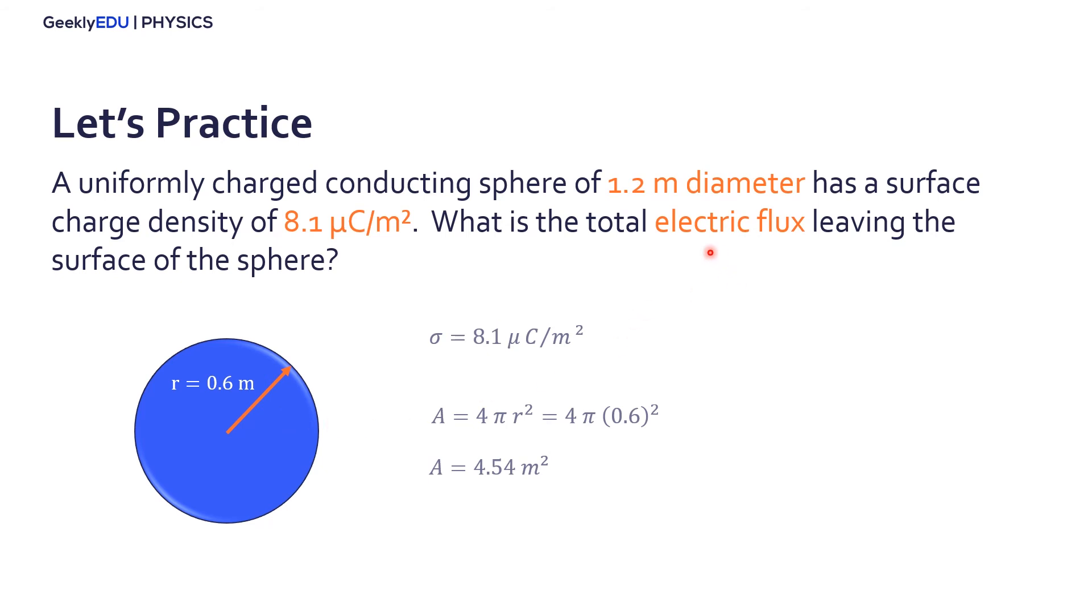Now before calculating the electric flux, we have to calculate the charge. So for this sphere here, we have the surface charge density. We can multiply it by the surface area, so we get the charge, which is 3.66 times 10 to the negative 5 coulomb.